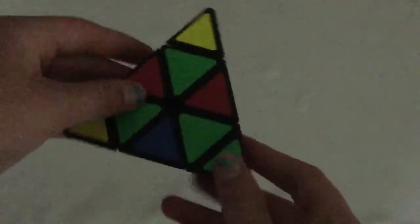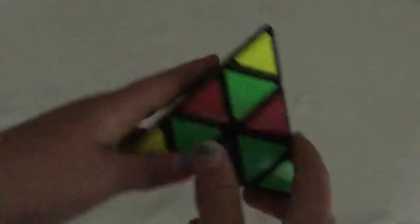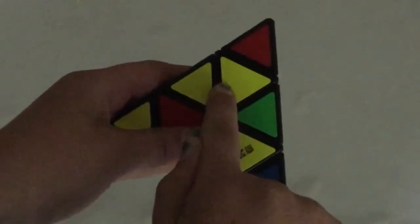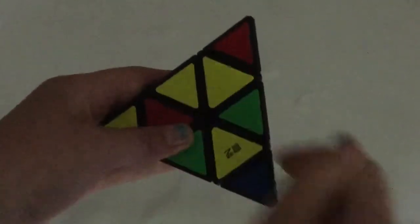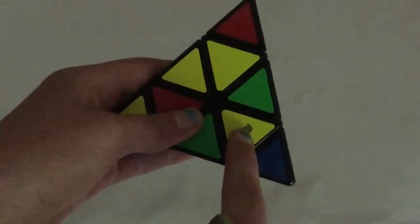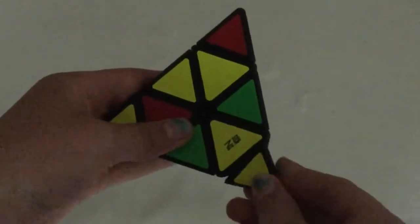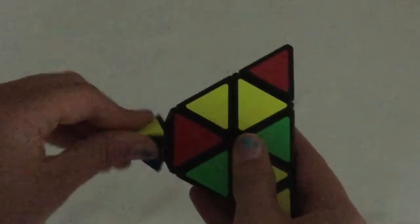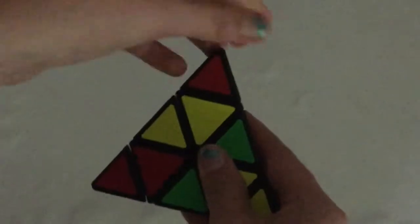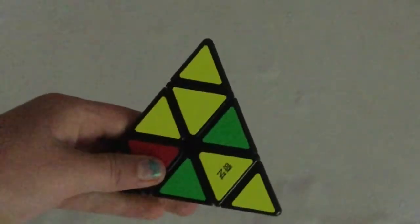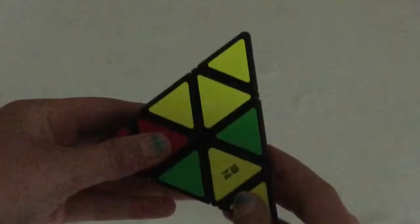So the first thing you do is you want to match up these pieces, so like this piece and the corner piece. So how you do that is you simply, I see this is yellow, this is blue, so I just turn it until they match. All right, the red, and there we go.